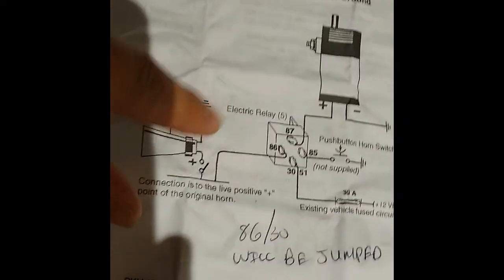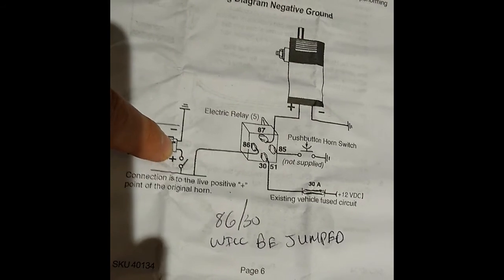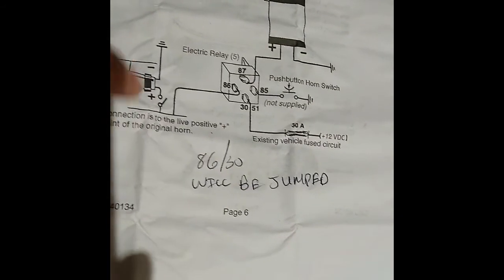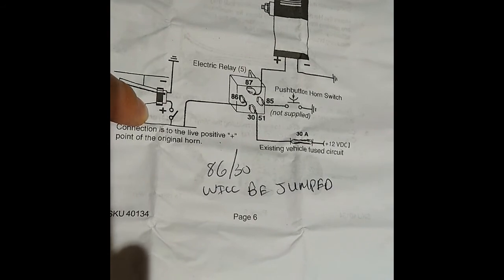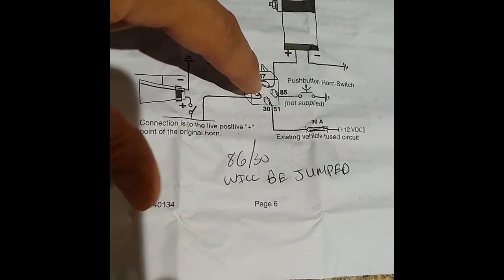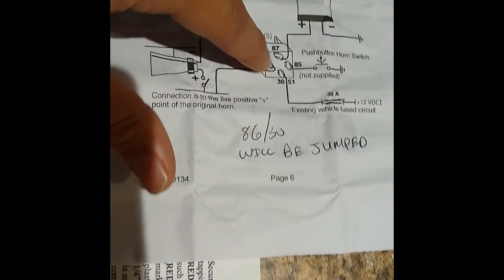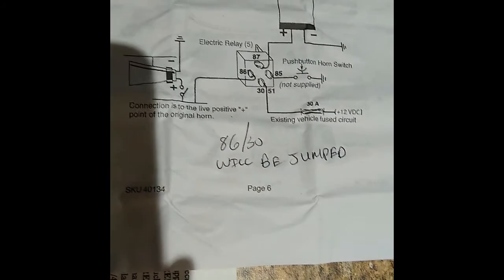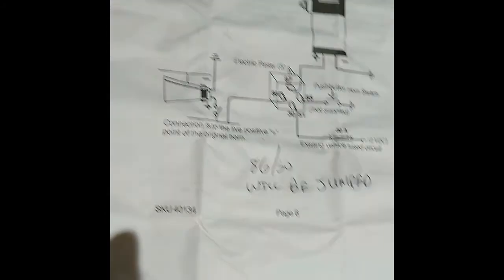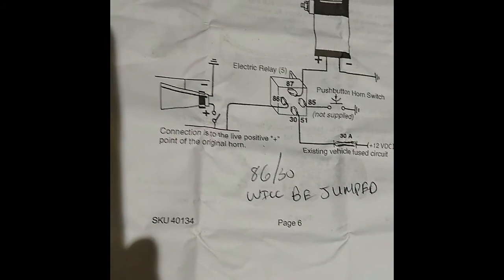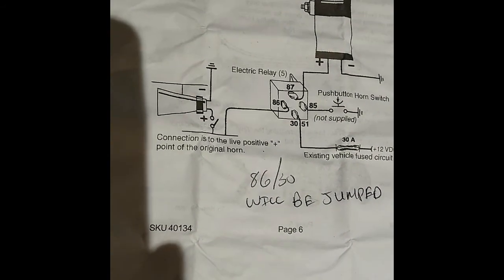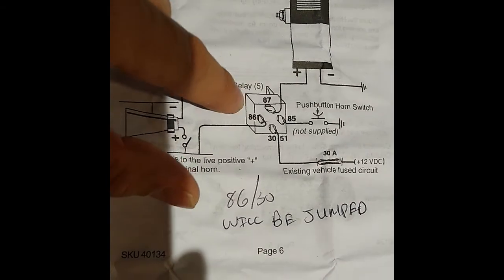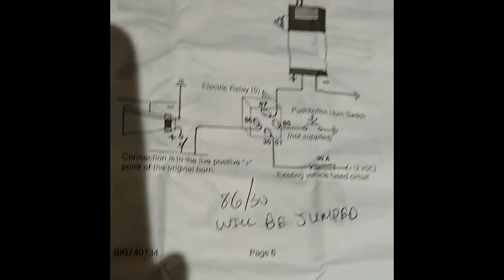So with that being said, in these instructions, just totally disregard this. I mean, they could have totally worded this different. I think the consensus is that these instructions pretty much suck. So as you can see, what we are going to do is we're going to jump 86 to 30. Those are going to be jumped. 85 is going to be my momentary switch, which is going to complete the circuit. It's basically just going to complete the ground, which is going to close the circuit and allow the compressor to operate. And 87 obviously is going to go to the compressor.